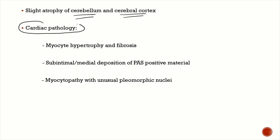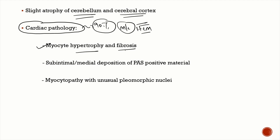Cardiac pathology is very important: 90% of Friedreich's ataxia patients have cardiac involvement, most commonly hypertrophic cardiomyopathy. Dilated cardiomyopathy can also occur but is less common. Findings include myocyte hypertrophy, fibrosis, subintimal or medial deposition of periodic acid-Schiff positive material, and myocytopathy with unusual pleomorphic nuclei.